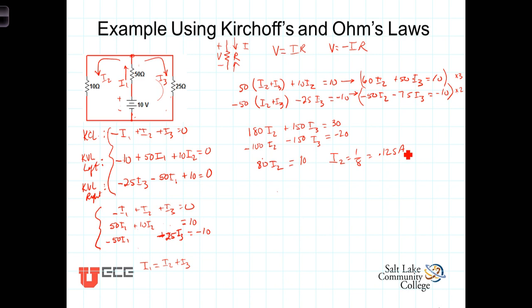Now with that value of I2 we can plug into either one of these two equations and solve for I3. So let's plug I2 equals 0.125 into the top one and we've got 60 times 0.125 plus 50 I3 equals 10. Solving that for I3 gives I3 equals 0.05. Now we can use this value for I3 and this value for I2. This one looks convenient. I1 equals I2 plus I3 which is 0.125 amps plus 0.05 amps. That gives us I1 equals 0.175 amps.